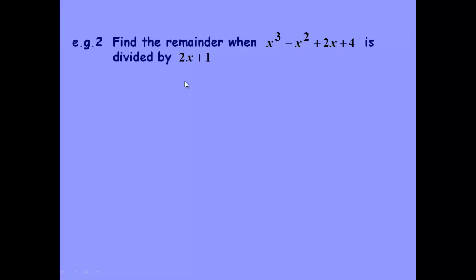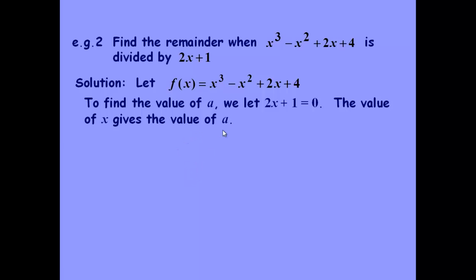OK, another example. This time we've got 2x plus 1, so a little bit trickier. Set it up as f of x equals. Then think about the value of a we need. Well, if 2x plus 1 is 0, then a would need to be minus a half, wouldn't it?